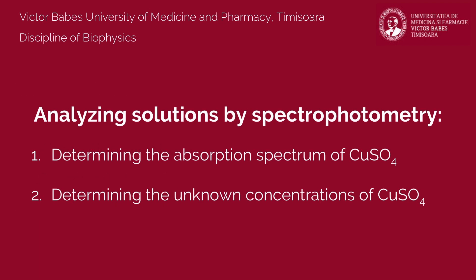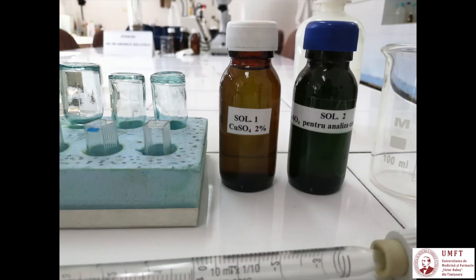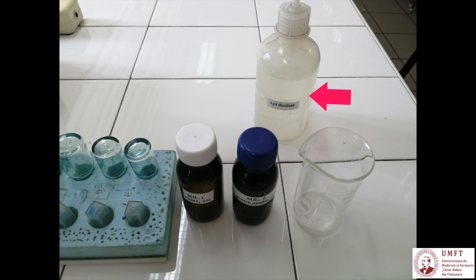In the first part of this work, you will determine the absorption spectrum of copper sulfate dissolved in water. In the second part, you will determine the unknown concentration of a copper sulfate solution. For this, you will use a spectrophotometer, two solutions of copper sulfate — one of known concentration 2% and the other of unknown concentration — distilled water, and measuring cuvettes.